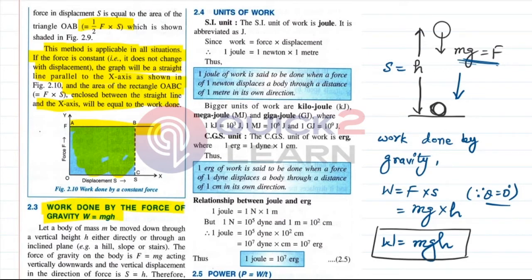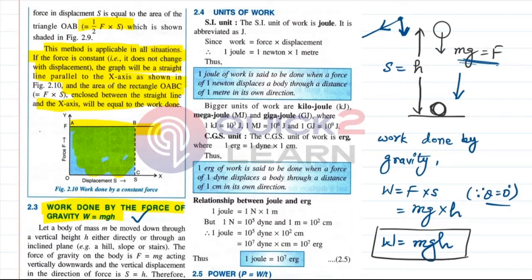This formula W = mgh applies regardless of how the body reaches height h — whether by a vertical path, stairs, a slope, or a hill. It doesn't matter, because gravity always acts vertically downward. So the work done by gravity is always calculated using the vertical height — the vertical separation of the point from ground level. This point should be clear to all of you.